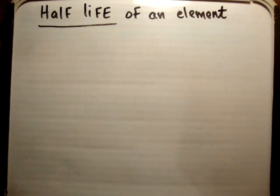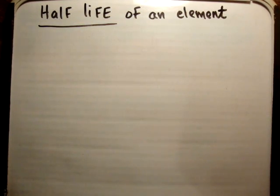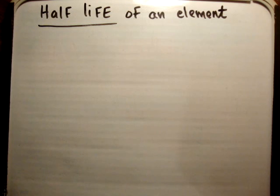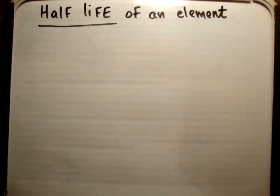In this video I'd like to talk about half-life and prove the formula for half-life. A half-life of an element is the amount of time it takes for half of the mass, or half of the number of atoms, to decay and to disappear.